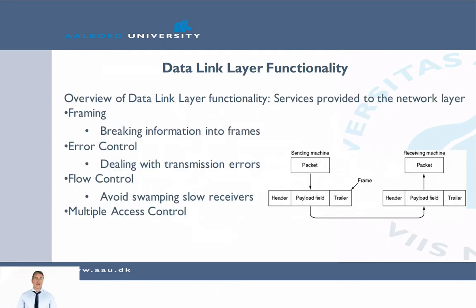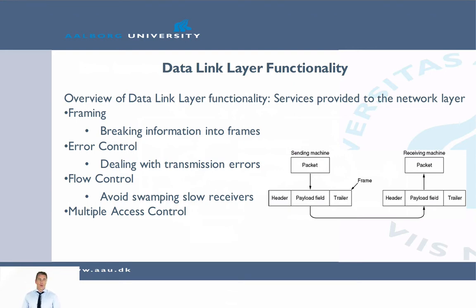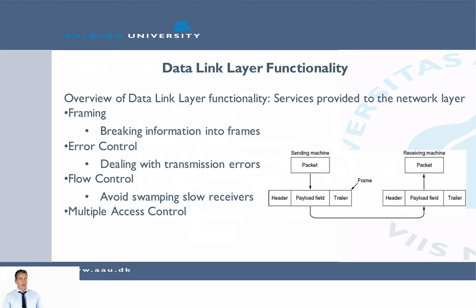The data link layer provides services to the network layer. We do framing, which is about breaking the information into frames, where the frame size depends on the protocol we are using. We can use error control to deal with transmission errors. We can also have flow control, which is about not wanting to overwhelm the receiver — not sending faster than the receiver is able to receive. We will also be talking about multiple access control, which is also part of the data link layer.